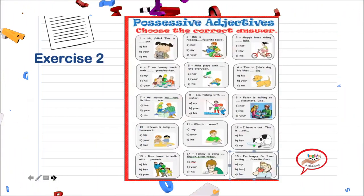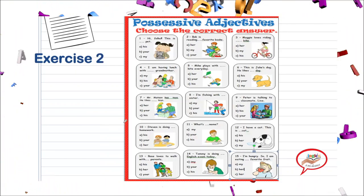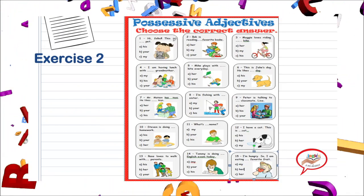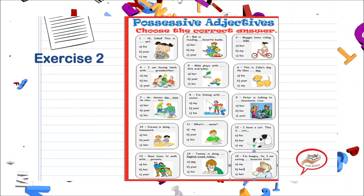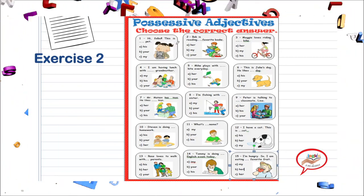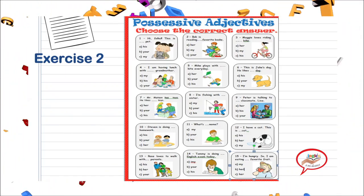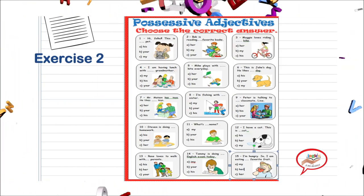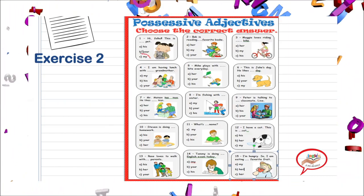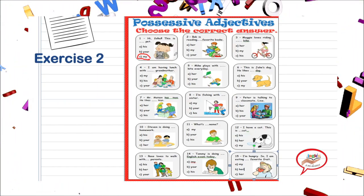Let's see exercise number two. We have to choose the correct answer. Vamos a leer cada una de las oraciones y vamos a irlas contestando. Hi folks, this is... Ella está hablando en primera persona, ¿verdad? Cuando estamos hablando en primera persona, siempre va a ser I. Por lo tanto, vamos a hacer my. Hi folks, this is my pet — porque dice que es su animal.